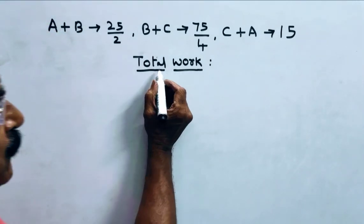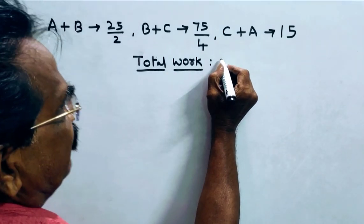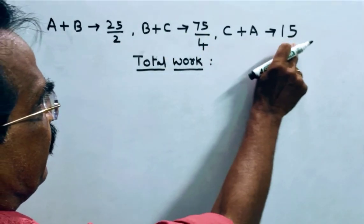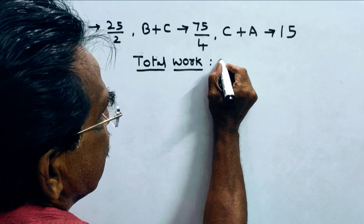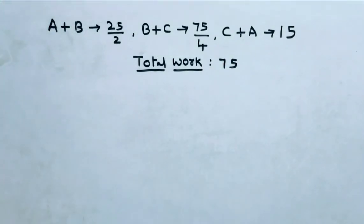Friends, see, say total work, total work the LCM of these three, LCM of these three is 75 units, 75 units.